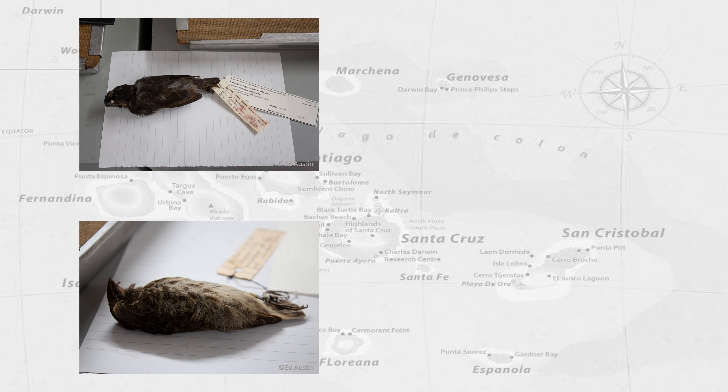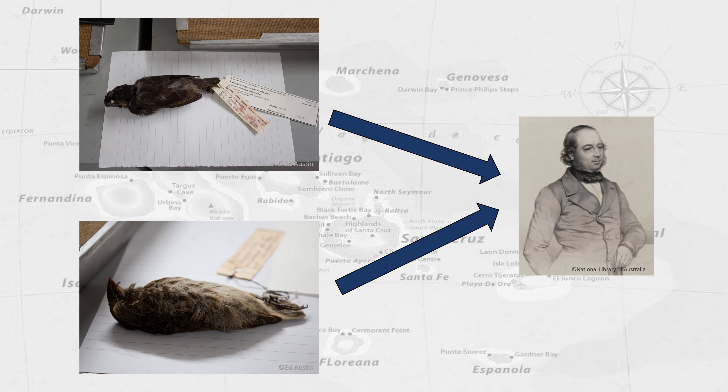The specimens Darwin collected whilst he was in the Galapagos were sent off to the British ornithologist John Gould in 1837. Gould noticed that many of the species had vastly different beak sizes and shapes, and thus helped classify 13 individual species.